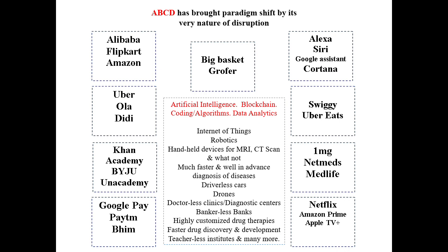These are some brands or companies that have entirely changed systems of business previously done by incumbents. Alibaba, Flipkart, and Amazon have changed the way people purchase materials. Uber, Ola, and Didi are taxi aggregators that changed the way we commute. Khan Academy, Byju's, and other online learning platforms are giants in their category but started as startups — with limited setup, limited resources, limited funds, but a very mind-blowing idea behind their success.